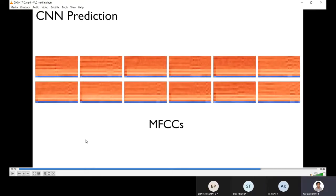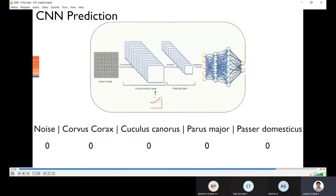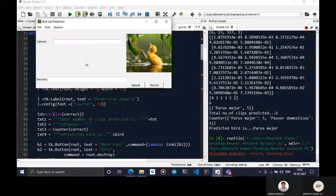These are the MFCCs obtained from the Corvus corax signal Abhinav mentioned. These are passed to the CNN model. As they're being passed, the predictions are being made at the bottom. As you can see, noise has two hits, but we can remove the noise. Corvus corax has the most hits - it has six hits. So it's the final predicted bird.